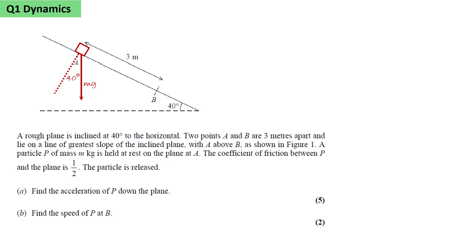We'll mark on the angle of 40 degrees between the normal to the plane and the vertical. We'll add the normal reaction and we'll add the limiting friction, mu R or a half R. We have to find the acceleration down the plane.